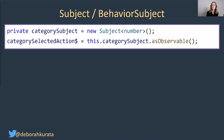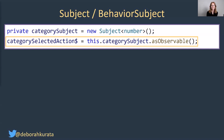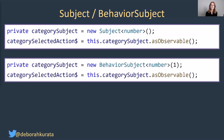But we still want to have the ability to access the read-only or observable part, and that's the purpose of the second line. So here we're defining an observable — notice the dollar sign at the end — and we're setting it equal to our subject's observable using asObservable.